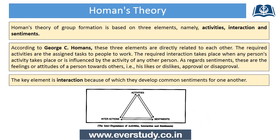Horman's Theory is based on three elements: activities, interactions, and sentiments. According to George C. Homans, these three elements are directly related to each other.